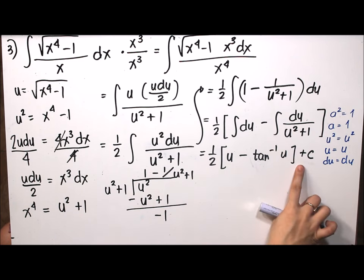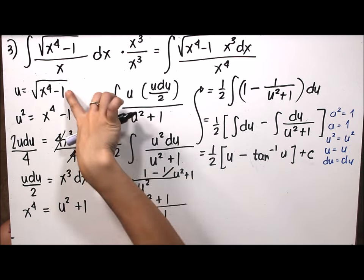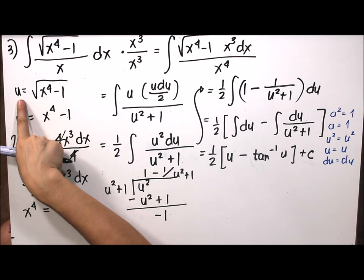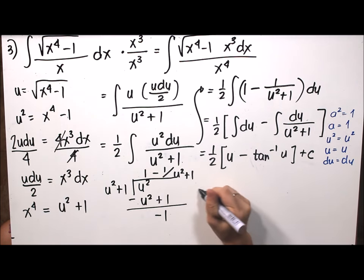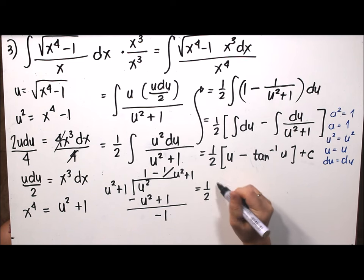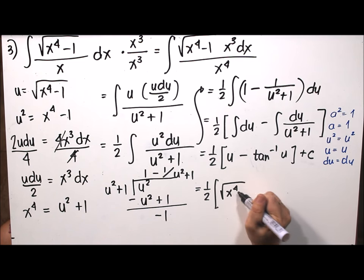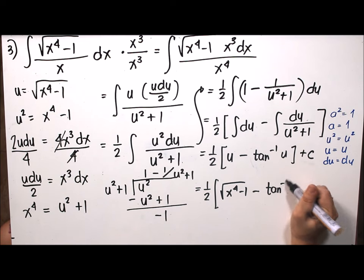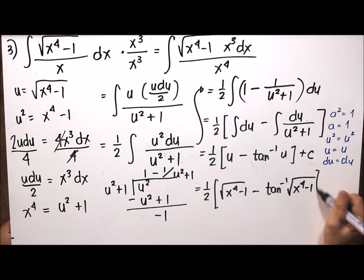Since the given is a function of x, we substitute back u equals the square root of x to the fourth minus 1. The final answer is one-half times the square root of x to the fourth minus 1, minus arctangent of the square root of x to the fourth minus 1, plus C.